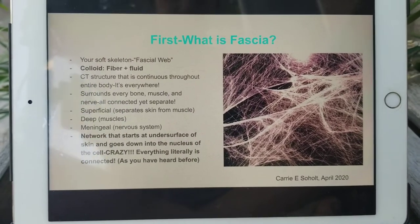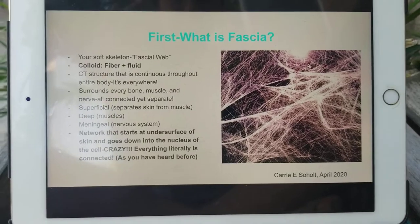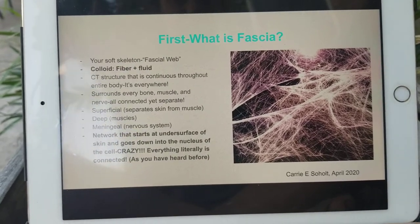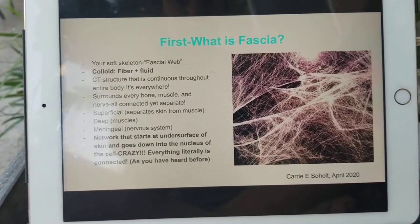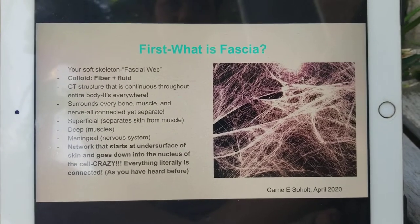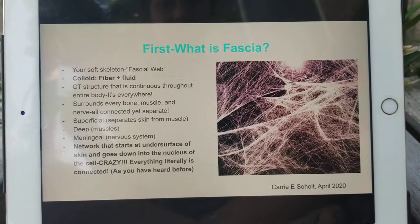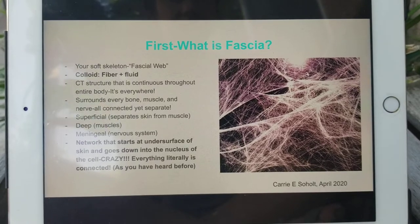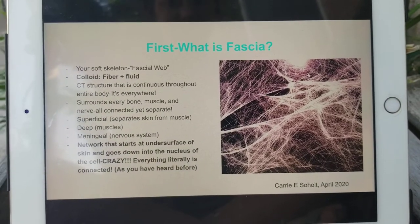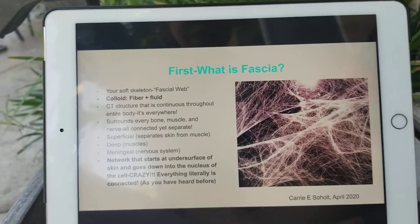This fascial network — this fibrous fascial web throughout our entire body — literally starts at the level of our skin and goes down as far as to the nucleus of all the cells in our body. Pretty crazy, actually.